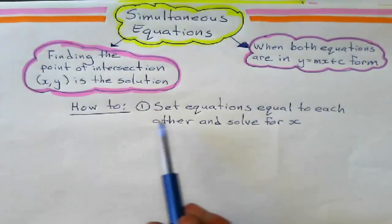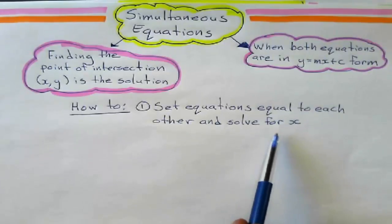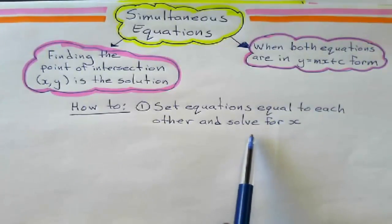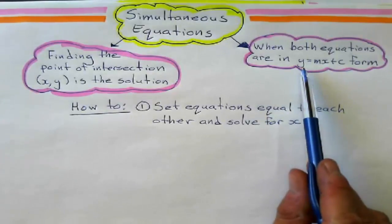So, here are the steps how to do it. The first step is we're going to set each equation equal to each other and solve for x. Since both equations are equal to y, we can set it up this way.